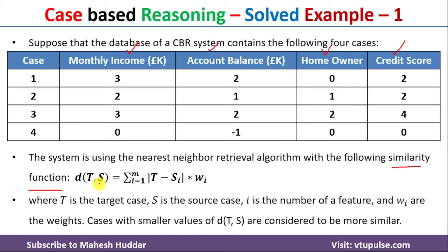The similarity function is: d = summation from i=1 to m (where m is the number of cases) of |t_i - s_i| multiplied by w_i. Here, t is the target case, s is the source case, and w_i is the weight assigned to each variable. Cases with a smaller value of distance d are considered more similar cases.